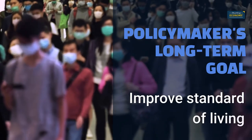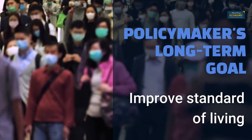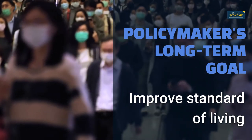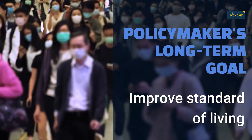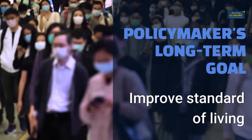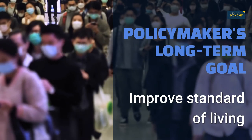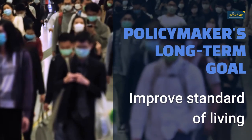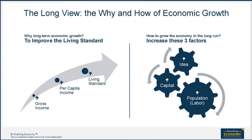Economic policy makers' long-term goal is to improve the country's standard of living and its population's well-being. Without economic growth, the standard of living does not improve, as had been the case in most countries before the Industrial Revolution. So, how do you make the economy grow in the long run? A simple formula for long-term economic growth dictates that you have to increase these three factors: labor, capital, and idea.